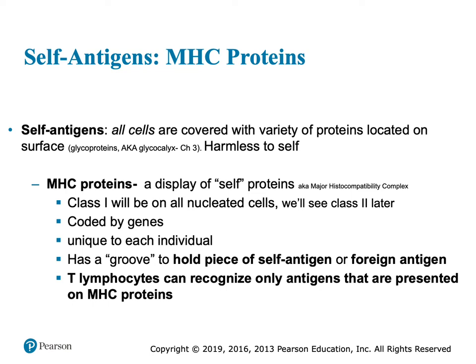There's one I'm going to tell you about called a major histocompatibility complex (MHC). All of our nucleated cells have a class one MHC. What determines our own personal MHC is our genes — so it's very individual. It has a groove that can hold another piece of self-antigen or a foreign antigen. I mentioned in the innate system that the natural killer cell — if you're missing this MHC1, he doesn't care. He's just going to destroy that cell; he pokes a hole in it and kills it.